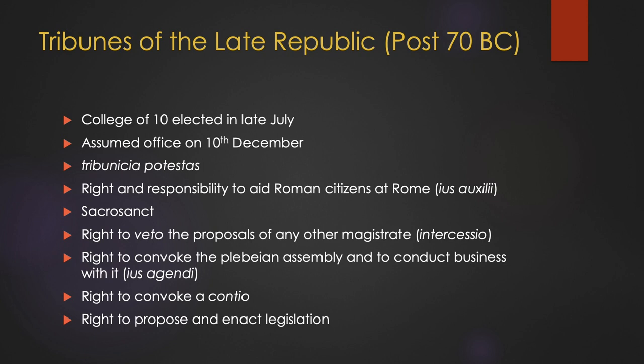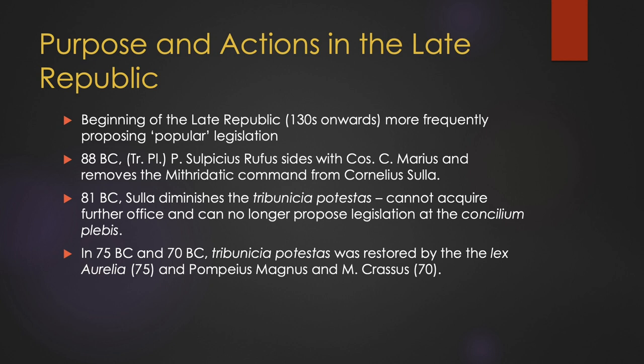The most important aspect of Tribunicia Potestas was finalised in 287 BC, when the Tribunes of the plebs gained the right to propose and enact, via the concilium plebis, legislation that was binding on the populace as a whole. By the beginning of the late Republic, we can see Tribunes of the plebs more frequently proposing popular legislation that would benefit the populace as a whole. Legislation such as land distribution and population redistribution were passed frequently.